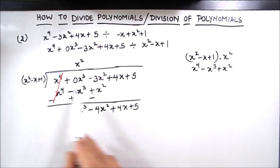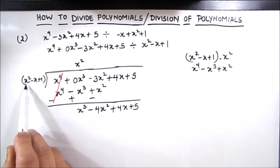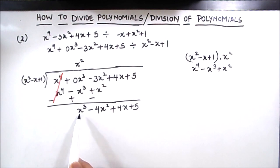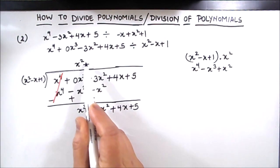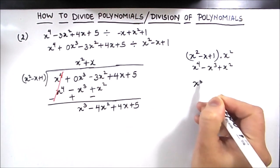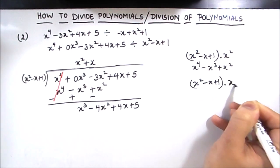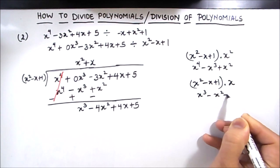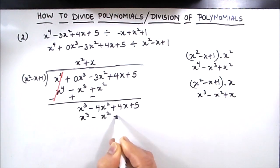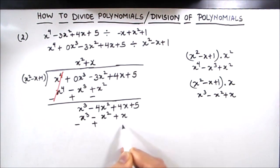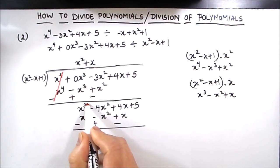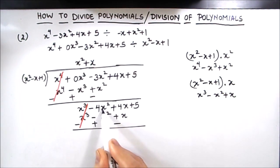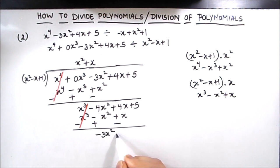We repeat with the new dividend. To get x cubed, we multiply the divisor by x. Multiplying x squared minus x plus 1 by x gives x cubed minus x squared plus x. Changing signs for subtraction: x cubed cancels, minus 4x squared plus x squared gives minus 3x squared, plus 4x minus x gives plus 3x, and the constant remains plus 5. Our new dividend is minus 3x squared plus 3x plus 5.